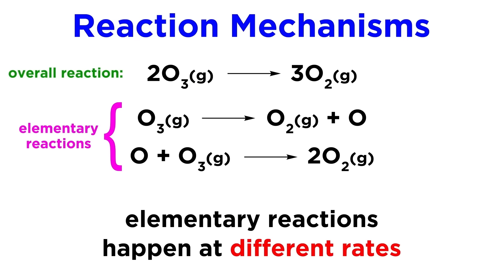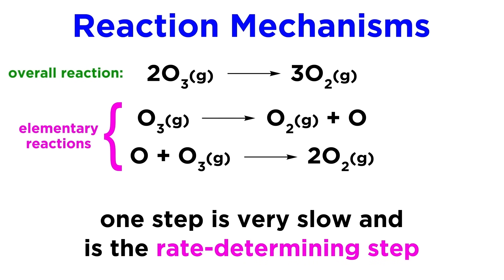We should also note that these elementary steps that make up the reaction mechanism will typically vary greatly in their rates, and there will usually be one elementary reaction that is the slowest by a significant factor. This is called the rate-determining step. This is the step that limits the rate at which the overall reaction can occur.